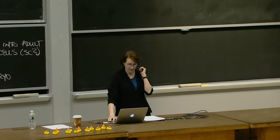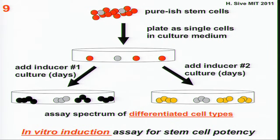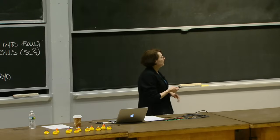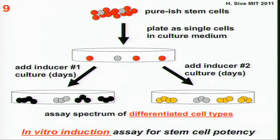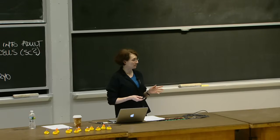Here's an in vitro induction assay. You start with something you think might be stem cells, put them into plastic tissue culture dishes, add nutrients to allow the cells to divide, then add inducers — like fibroblast growth factor or retinoic acid — and ask what happens. The cells will go on in general to differentiate into different cell types, and depending on what they differentiate into, you can say something about the potency of these putative stem cells.